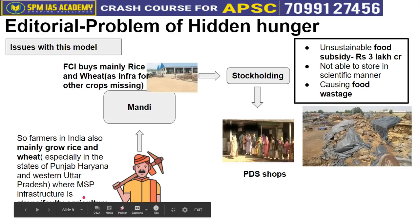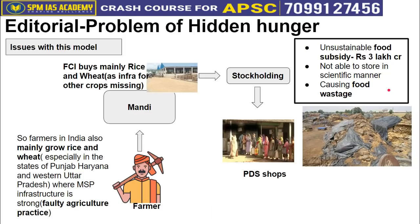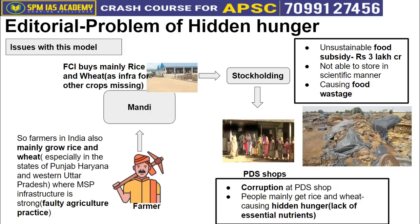The fourth problem: when food grain reaches PDS shops, rampant corruption occurs — PDS shop owners steal food grain and sell it in the market. The fifth and sixth problems are the most critical — the problem of hidden hunger, associated with this MSP-PDS system.